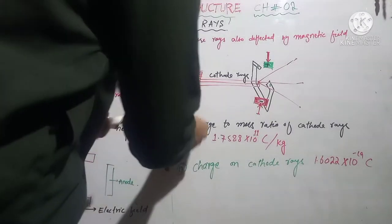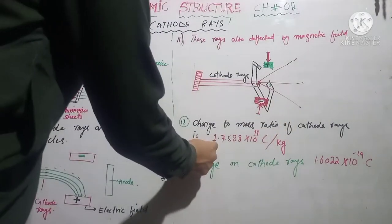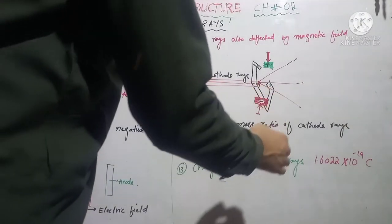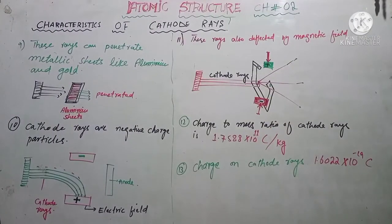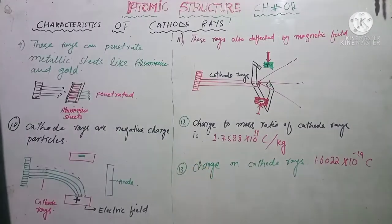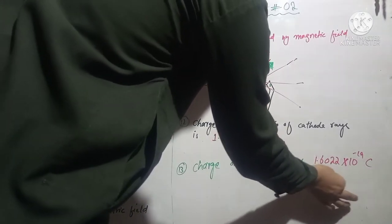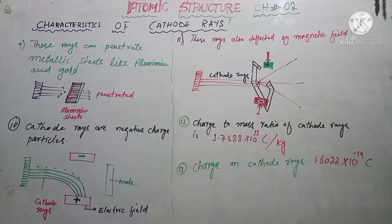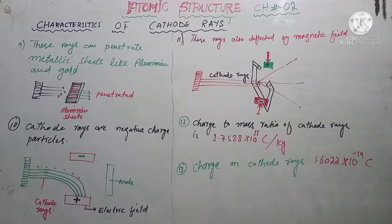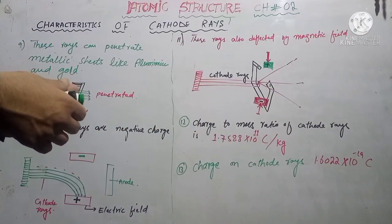Characteristic number 12: the charge to mass ratio of cathode rays is 1.7588 × 10¹¹ coulombs per kilogram. Characteristic number 13: the charge on cathode rays is 1.60220 × 10⁻¹⁹ coulombs. These are the characteristics of cathode rays. Thanks for watching.